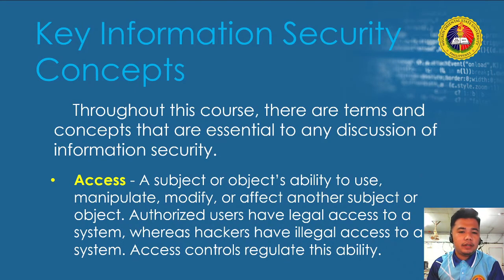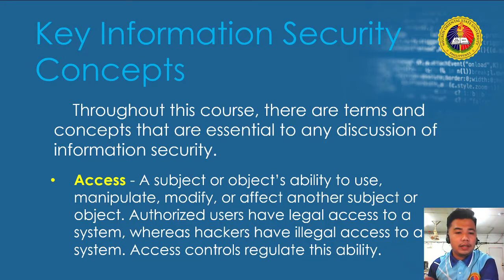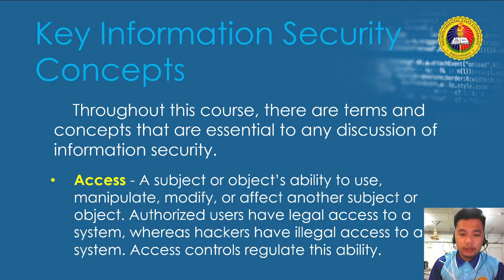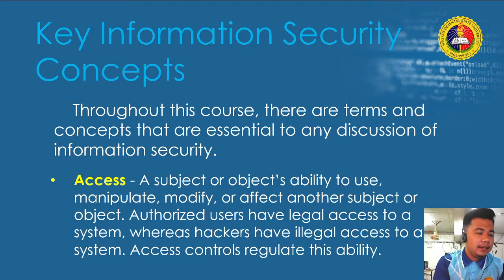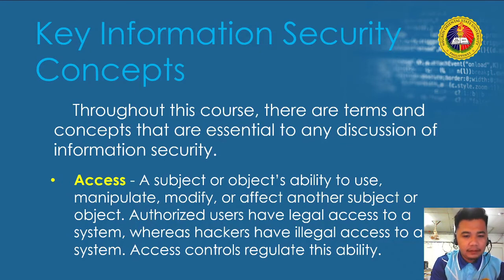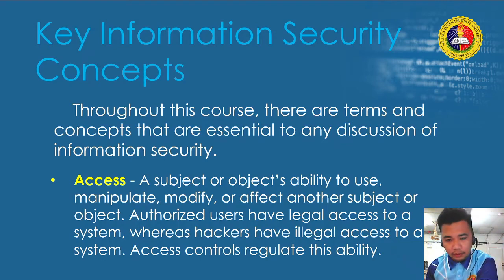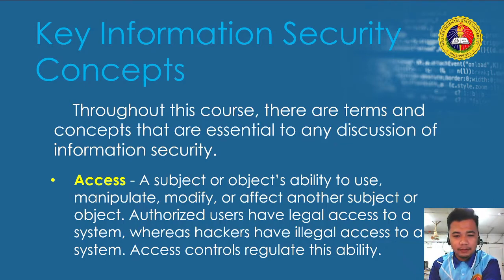Now let's talk about the key information security concepts — terms essential to any discussion of information security. Before we learn more about information security, let us first understand the terminologies we'll be using throughout the course. First: access — a subject or object's ability to use, manipulate, modify, or affect another subject or object. Authorized users have legal access to a system, whereas hackers have illegal access. Access controls regulate this activity. For example, who can access your personal Facebook account? It should only be you, unless you share your credentials.